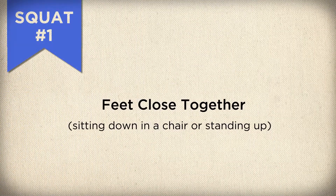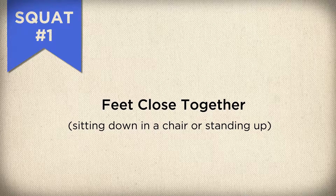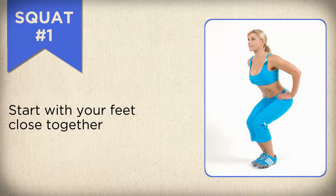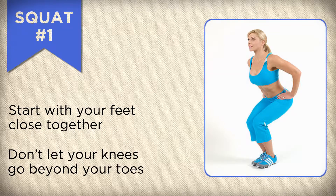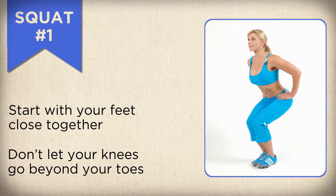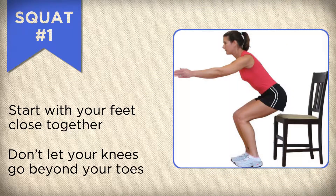So let's try our functional training with the squat. The first squat we're going to try is a squat with feet close together, which would mimic sitting down in a chair or standing back up after sitting for a while. You want to have your feet close together and perform your squat, being careful not to let your knees go beyond your toes, holding your abs in and maintaining a nice tall posture.